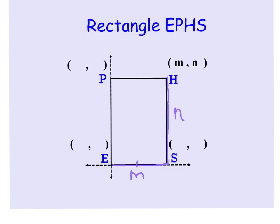Because it's a rectangle, we know that this side is congruent to that side, so that's also M, and we know that these two sides have to be congruent. So obviously E is at the point zero zero.